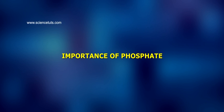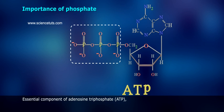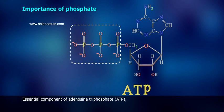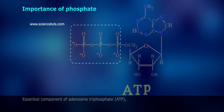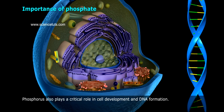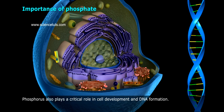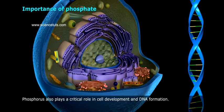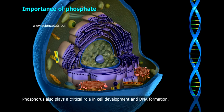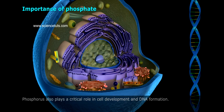Importance of phosphate: it is an essential component of adenosine triphosphate, ATP. Phosphorus also plays a critical role in cell development and DNA formation.